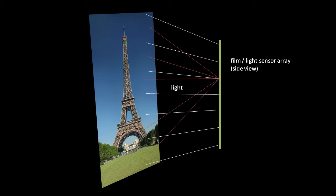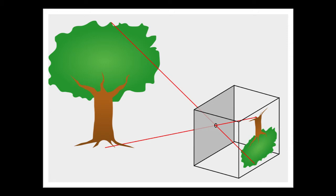Lenses focus light from different parts of the scene onto different parts of the film or sensor array. The very simplest kind of lens is a pinhole lens — punch a small hole in a box and you have a pinhole camera. Light from a point at the top of the tree passes through the hole and only strikes a point at the bottom of the box's interior, and vice versa. The image on the interior back surface gets mirrored upside down, and also flipped horizontally from the observer's perspective.